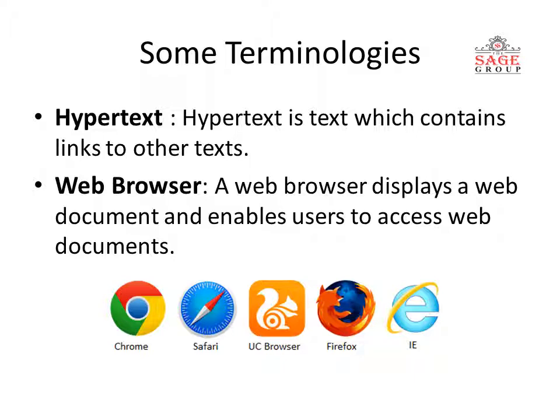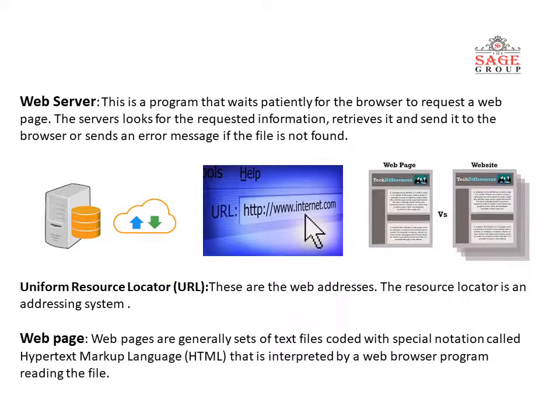Chrome, Safari, and Firefox are all web browser examples. Next is web server. A web server is a program that waits patiently for the browser to request a web page. The server looks for the requested information, retrieves it, and sends it back to the browser.